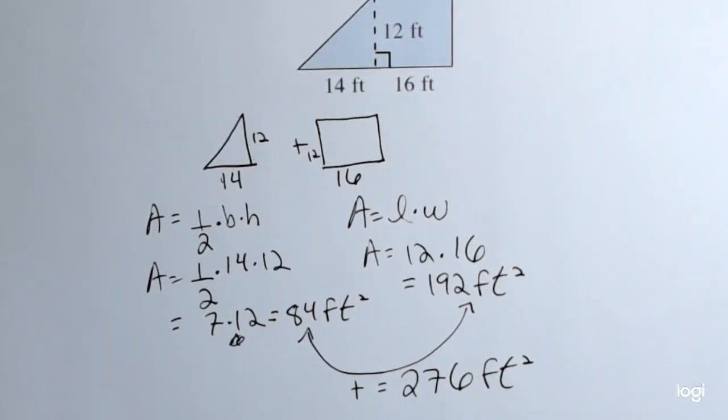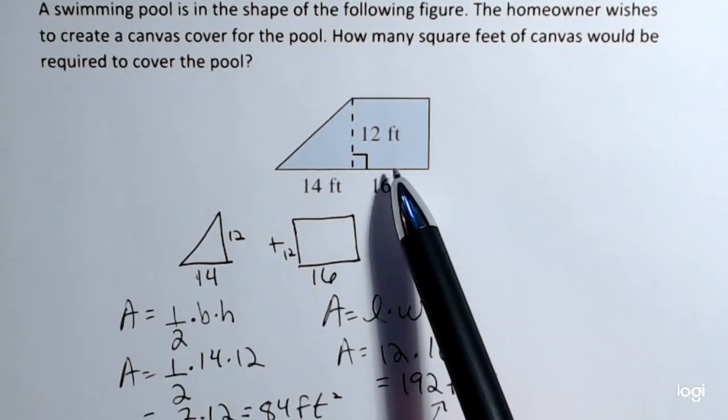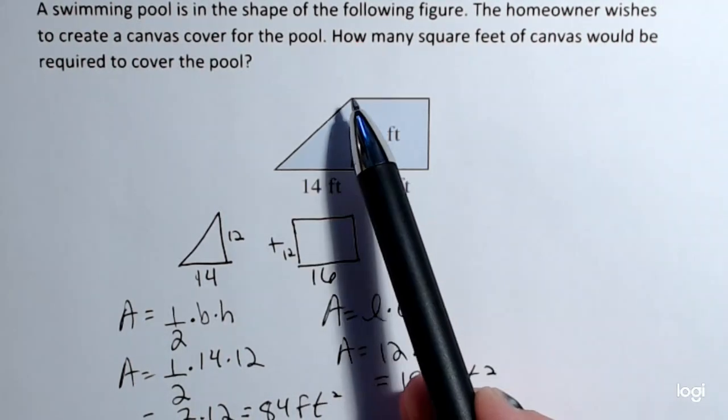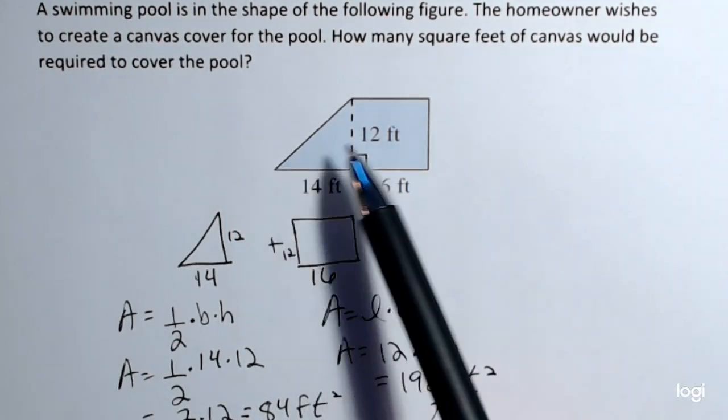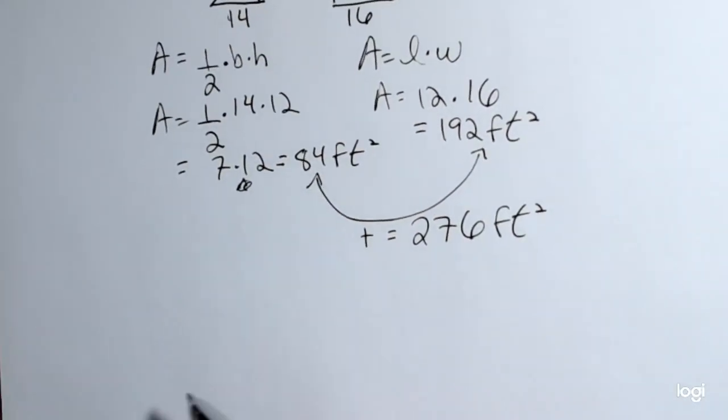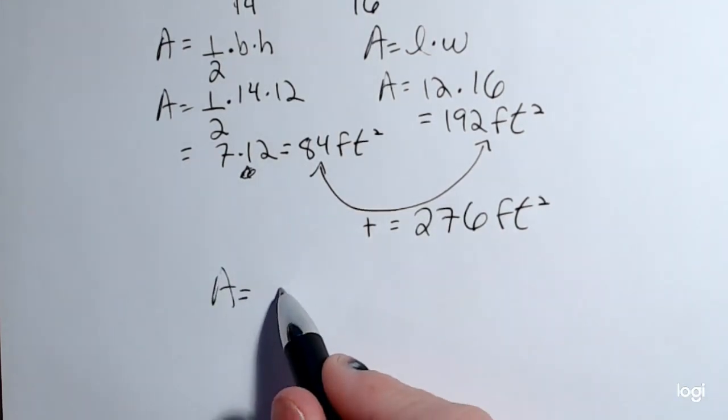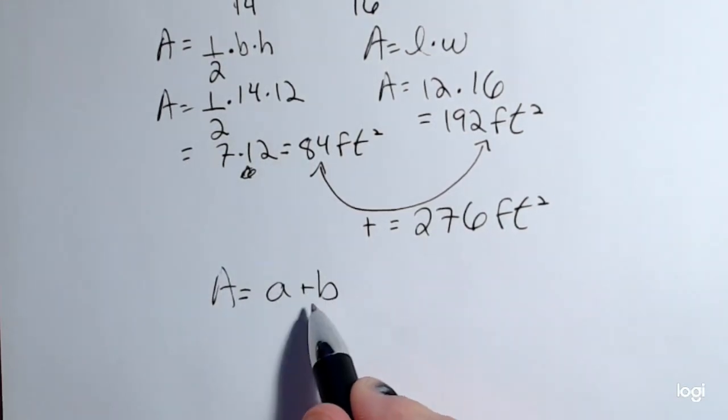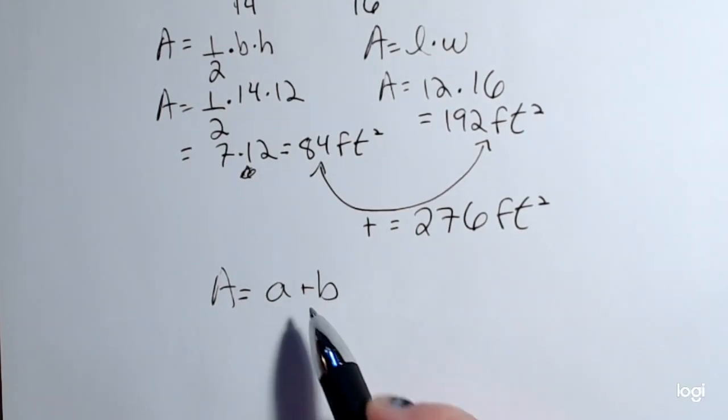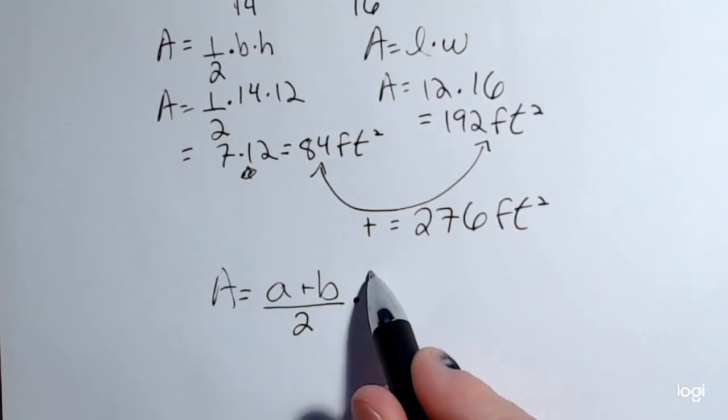Now alternatively, you can recognize this shape as a trapezoid. We have two parallel sides and two non-parallel sides. And the formula for a trapezoid is the sum of the bases, I'll just call it base a plus base b, divide that sum by two and then times the height.